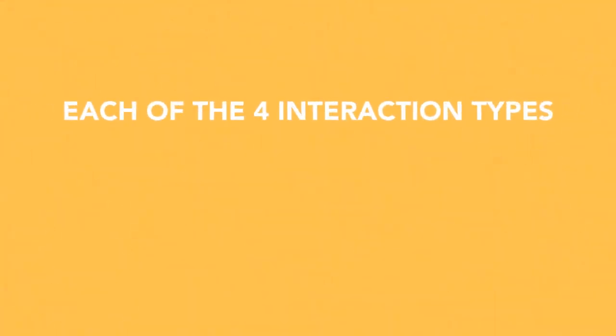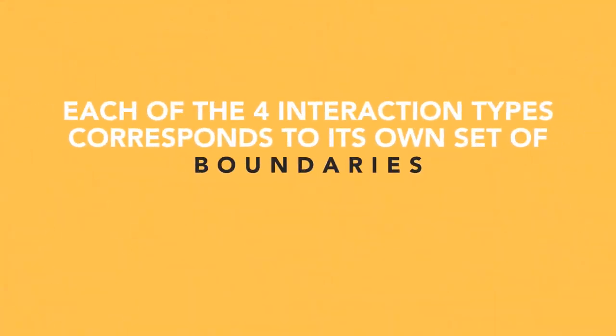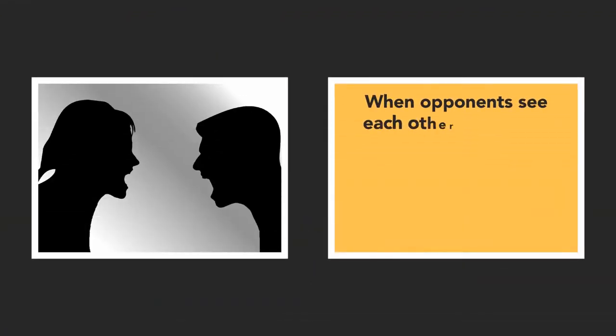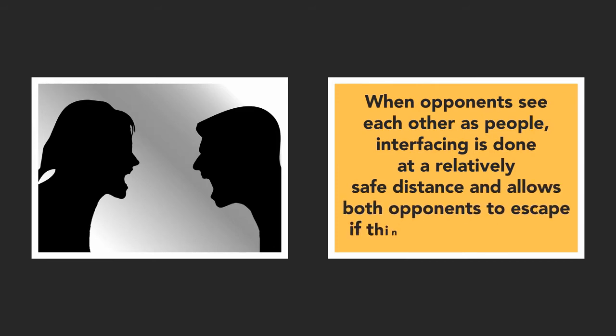Each of the four interaction types corresponds to its own set of boundaries, ranges, and comfort zones. When opponents see each other as people, interfacing is done at a relatively safe distance and allows both opponents to escape if things get too intense.